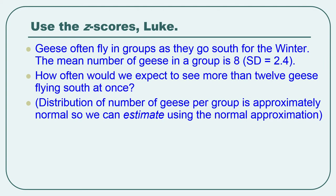Never mind about why we care about that question. So we know that the distribution of the number of geese per group is approximately normal. Because of that we can estimate the probability of seeing more than 12 geese flying south at once. And we can do that by using the normal approximation.